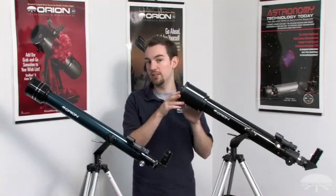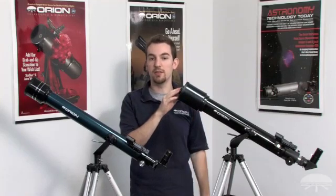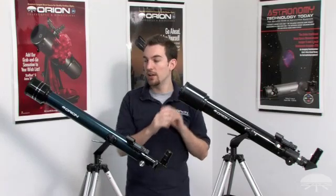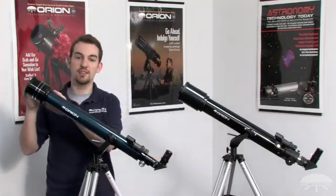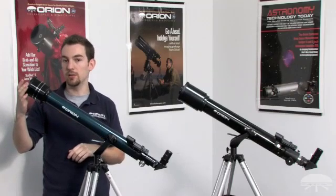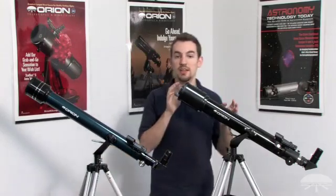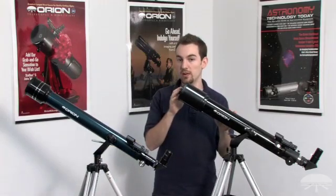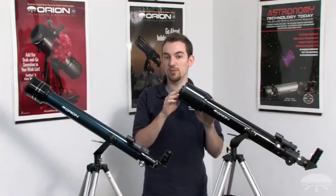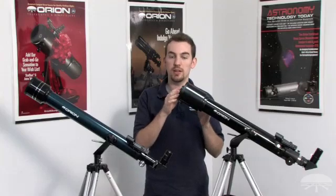The main difference between these two telescopes is that the Observer 70 has a 70 millimeter objective lens at the front of the telescope, while the Observer 60 has a 60 millimeter objective lens. This means that the Observer 70 is going to collect 36 percent more light than the Observer 60. This makes it easier to see those faint galaxies, those faint nebulae, and it's also going to show more detail in the moon and the planets.